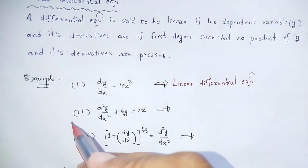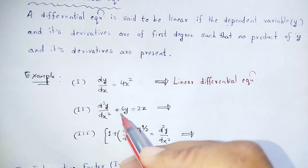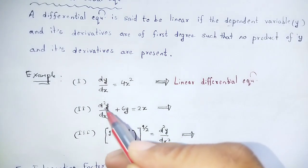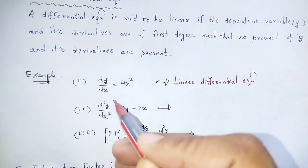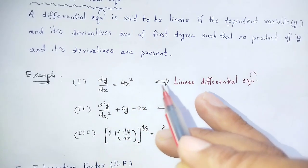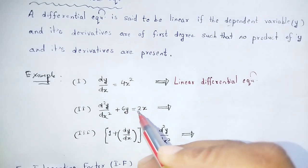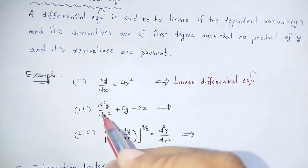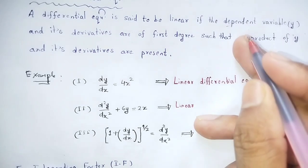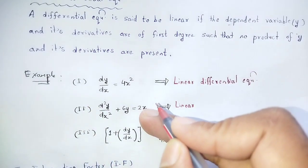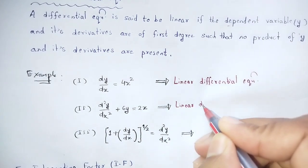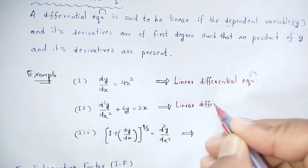Example number 2: d²y/dx² + 6y = 2x. The highest derivative is d²y/dx², which appears to the first degree, with no product of y and its derivatives. Rearranging: d²y/dx² + 6y - 2x = 0. This is a linear differential equation.